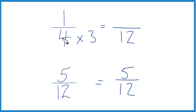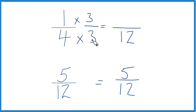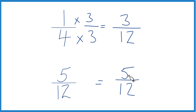I multiply the denominator by 3, but I also have to multiply the numerator by 3, because 3 over 3 is just 1. So when I multiply by 1, I don't really change the value, just the way it's represented. 1 times 3 is 3.